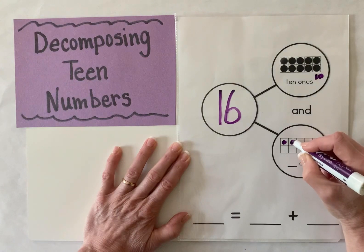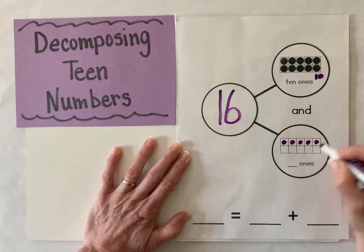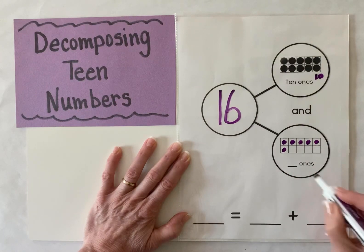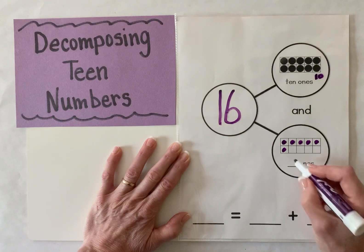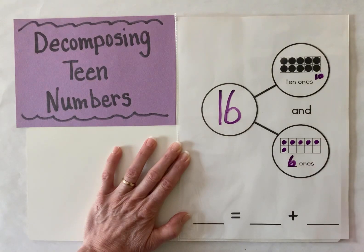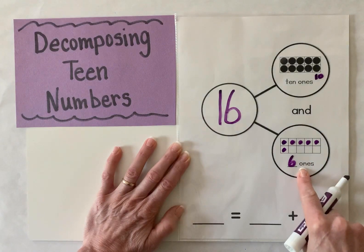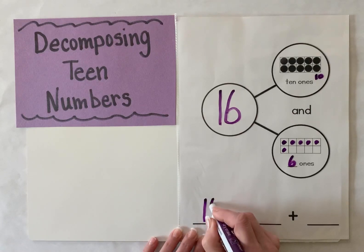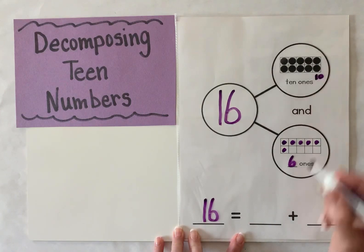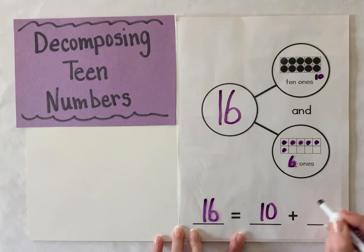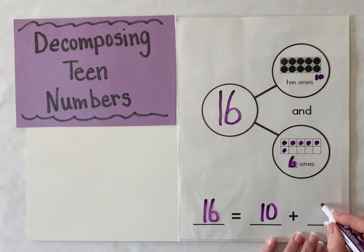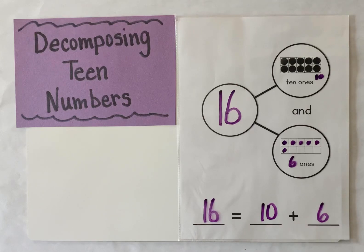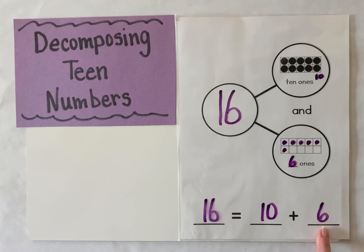If this is 10, let's keep counting: 11, 12, 13, 14, 15, 16. How many more ones did I need? That's right, I needed six more ones. So 10 ones and six ones make up my 16. Let's write our equation — we're decomposing 16, so 16 equals 10 plus six more. Read the equation with me: 16 equals 10 plus 6. Excellent job decomposing the number 16 using a number bond.